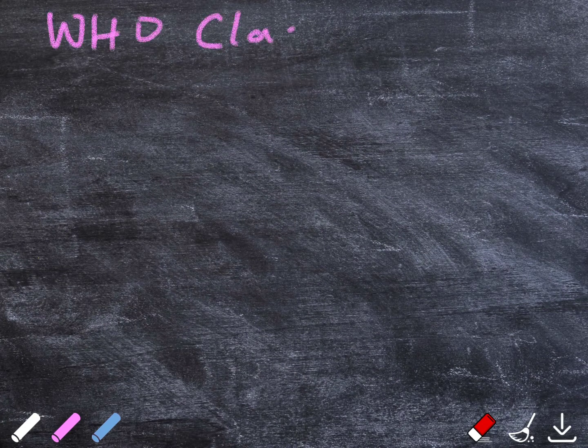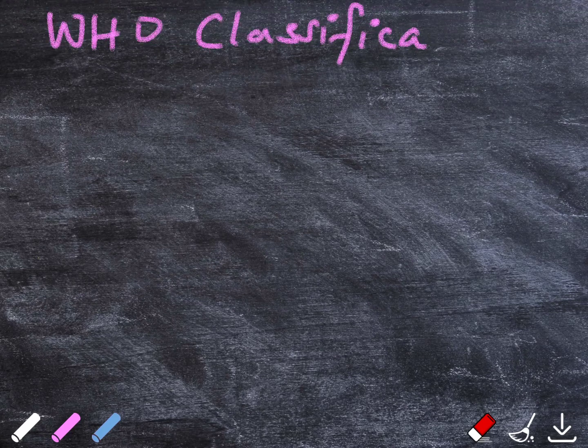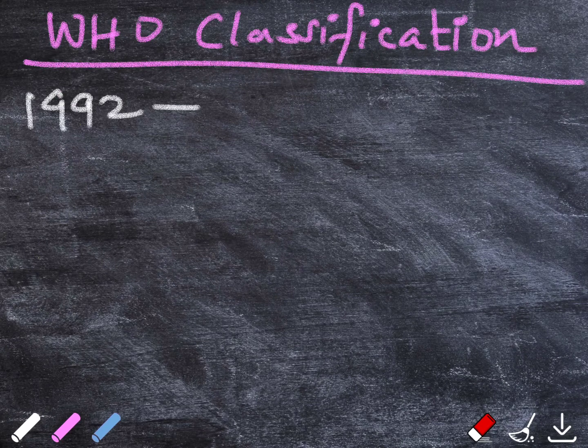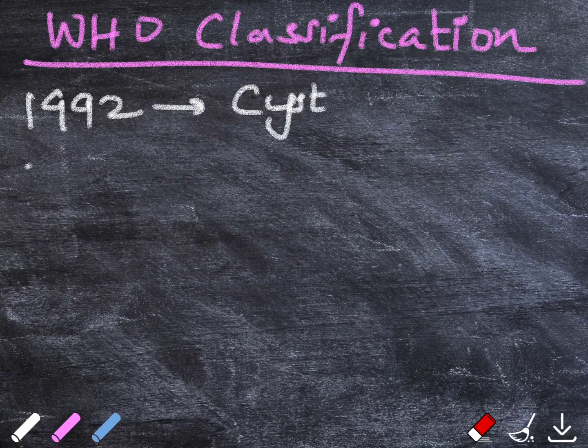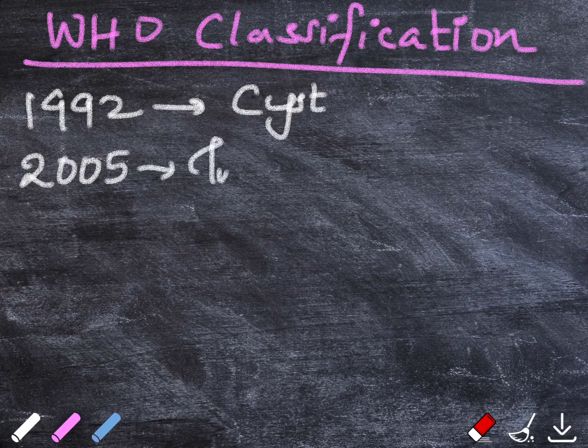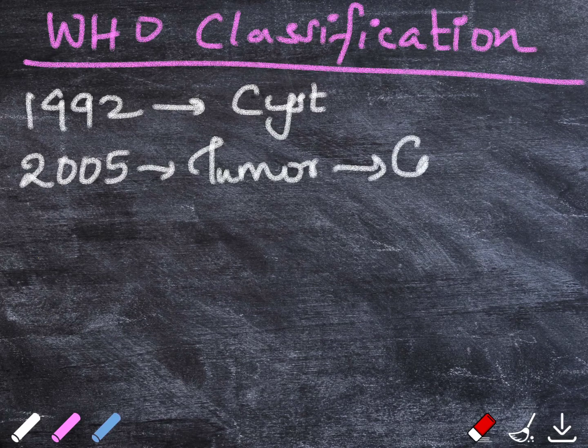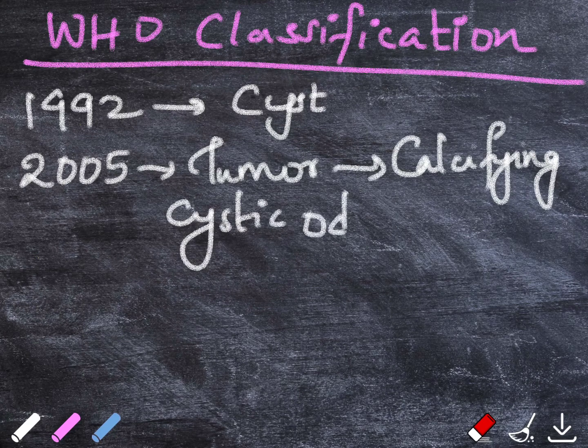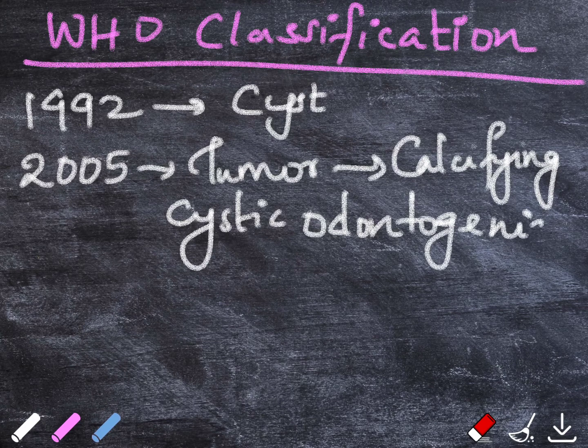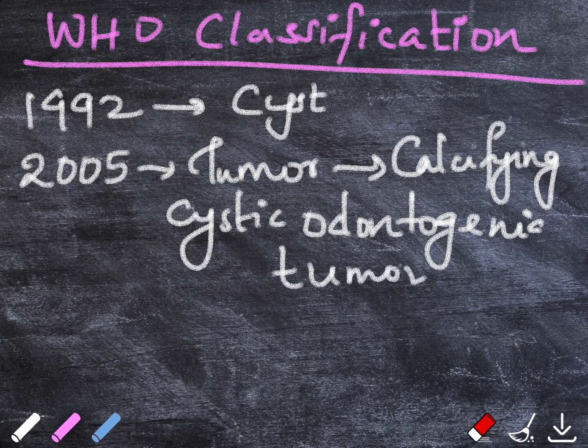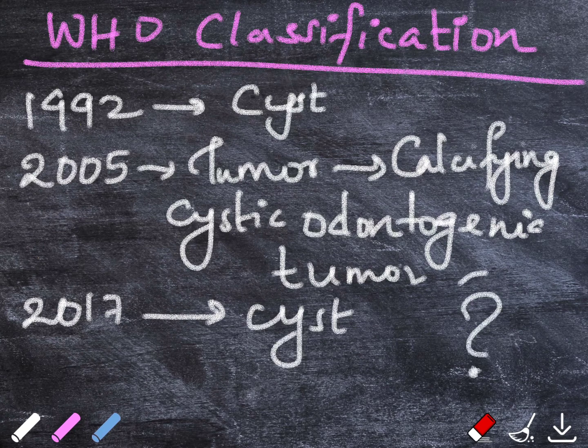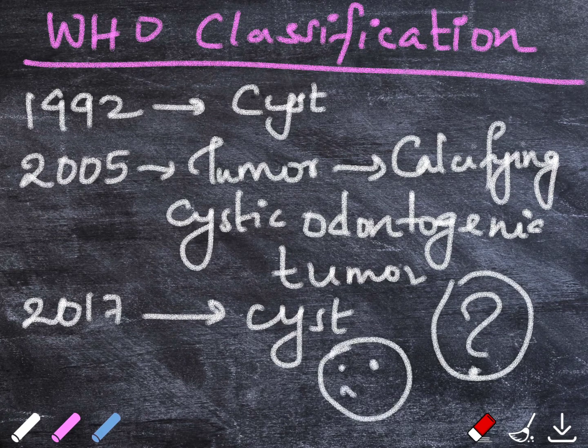What is the place of this particular cyst in WHO classification? In the year 1992, it was classified as a cyst, COC. In the year 2005, it was put as a tumor, the calcifying cystic odontogenic tumor, which is a mixed lesion. In the year 2017, WHO again reclassified as a cyst. Why so many changes? It's so confusing.